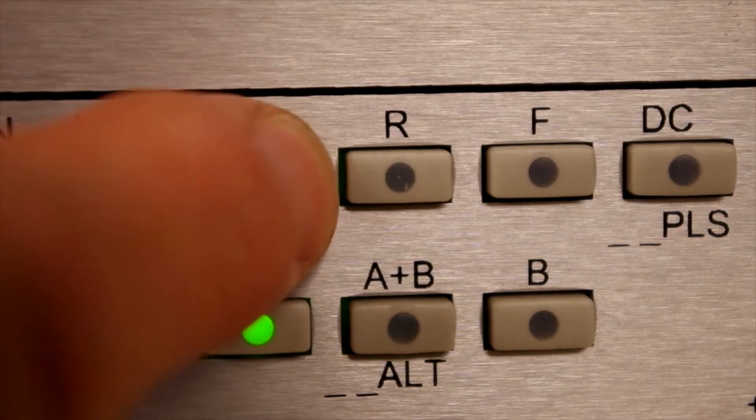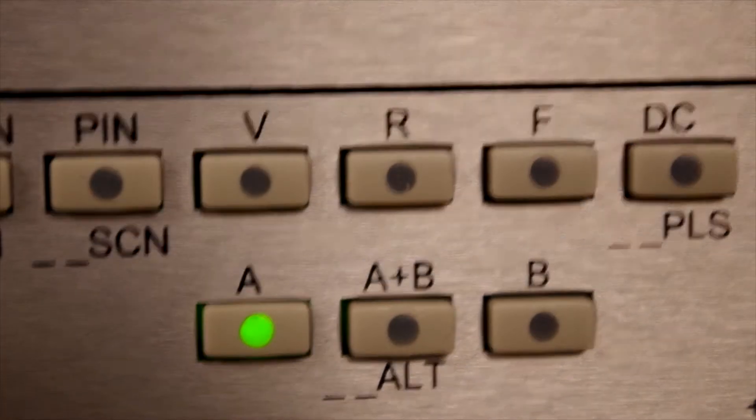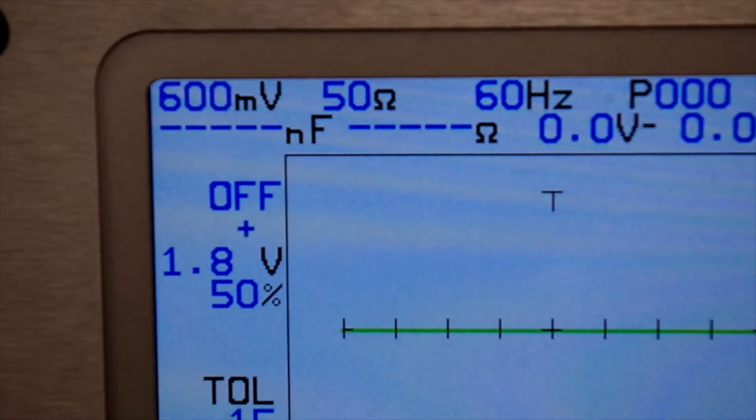You can easily enable automatic stepping through the voltage, resistance, or frequency settings by pressing the range button twice. This will assist you in hands-free operation of the tracker.